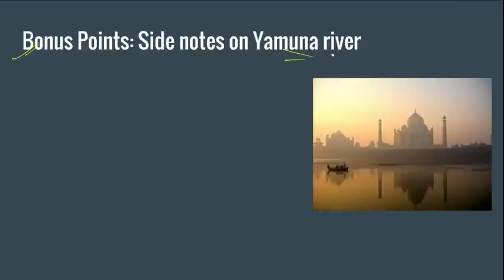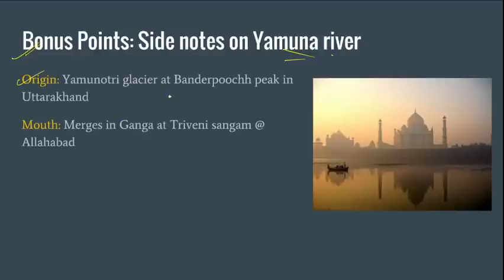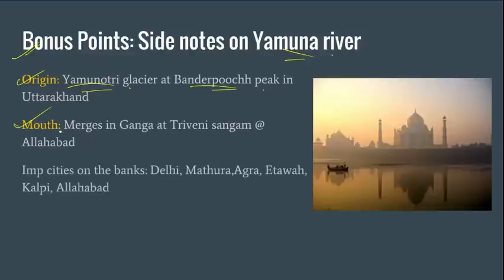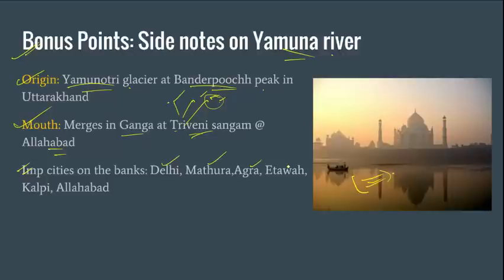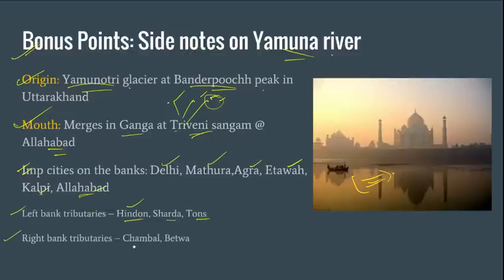Now some bonus points about the Yamuna river. Yamuna originates in Uttarakhand at the Yamunotri Glacier in the Himalayas and merges into the Ganga at Triveni Sangam in Allahabad. It is called Triveni because three rivers meet there: Ganga, Yamuna, and Saraswati — Saraswati being a mythological river believed to be underground. Important cities on the banks of Yamuna include Delhi, Mathura, Agra, Etawah, Kalpi, and Allahabad. Left bank tributaries include Hindon, Sharda, and Tons; right bank tributaries are Chambal and Betwa.